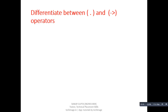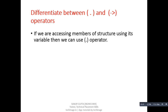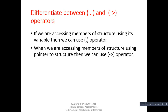Next question: differentiate between dot and arrow operators. If we are accessing members of a structure using its variable, then we use the dot operator. When we are accessing members of a structure using a pointer to the structure, then we use the arrow operator. Thank you.